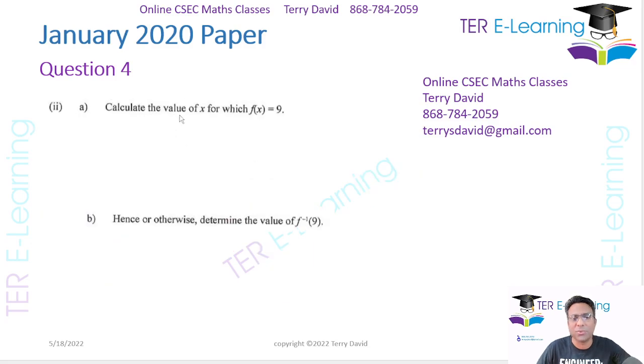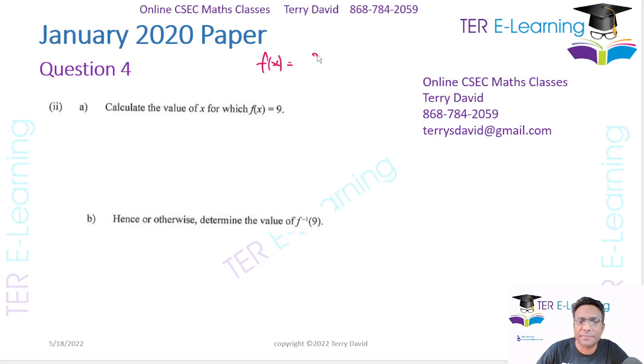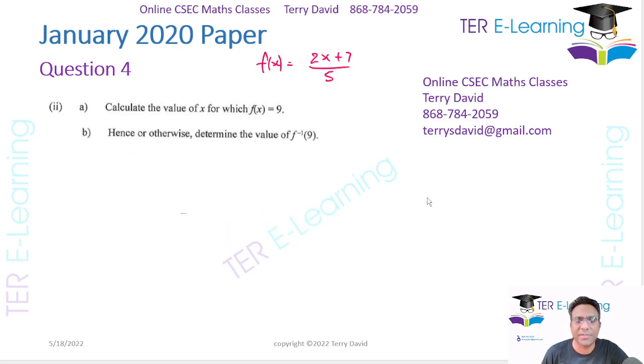Next part, they want us to calculate the value of x for which f of x is equal to 9. This is what they gave us as f of x. They said f of x is 2x plus 7 over 5. So all we need to do for this part here is actually just put 2x plus 7 over 5 is equal to 9.